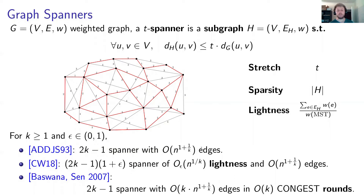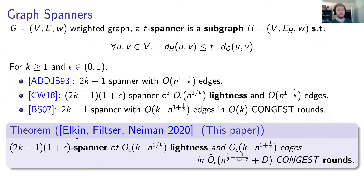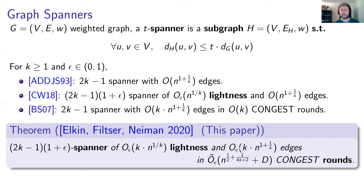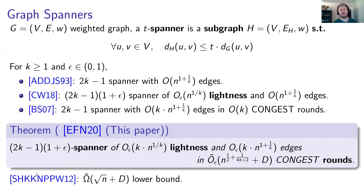Our contribution is the construction of light spanners in the congested model. Specifically, we showed that one can construct a (2K minus 1)(1 plus epsilon)-spanner with lightness K times n to the 1 over K — the same as Chesik and Wolfielsen — in square root n plus d rounds, plus this additional n to the 1 over (4K plus 2) factor. Notice it is quite close to being tight, since by Sarma et al., one must use at least square root n plus d rounds because this spanner is light, so it approximates the MST.